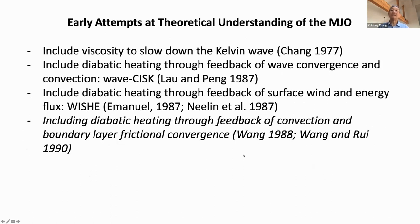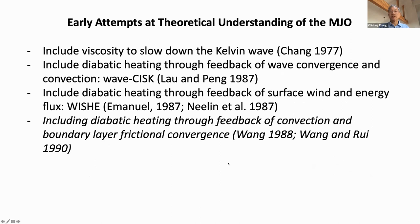So the early attempt follows this thinking: add viscosity, add diabatic heating — especially the interaction between diabatic heating and the wind — add surface evaporation, and add a boundary layer. We're going to discuss in detail how each of these components plays a role in modern MJO theory.